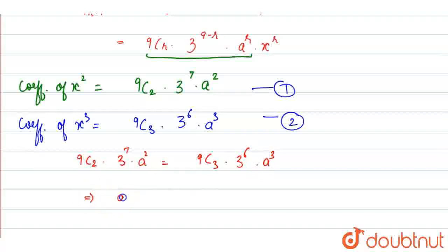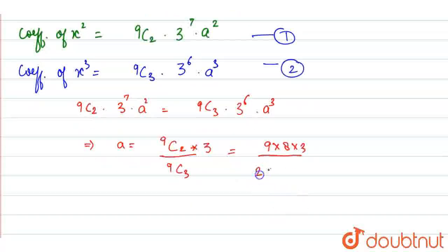From this, we will get a equals 9C2 upon 9C3 multiplied by 3. So solving this, we will get 9 times 8 times 3 upon 2, over 9 times 8 times 7 upon 3 times 2.